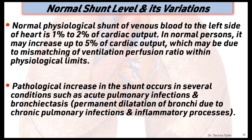Normal physiological shunt of venous blood to the left side of the heart is one to two percent of cardiac output. In a normal person it may increase up to five percent of cardiac output, which may be due to mismatching of the ventilation-perfusion ratio within physiological limits. Pathological increases in shunt occur in several conditions such as acute pulmonary infections and bronchiectasis, where there is permanent dilatation of the bronchi due to chronic pulmonary infections and inflammatory processes.